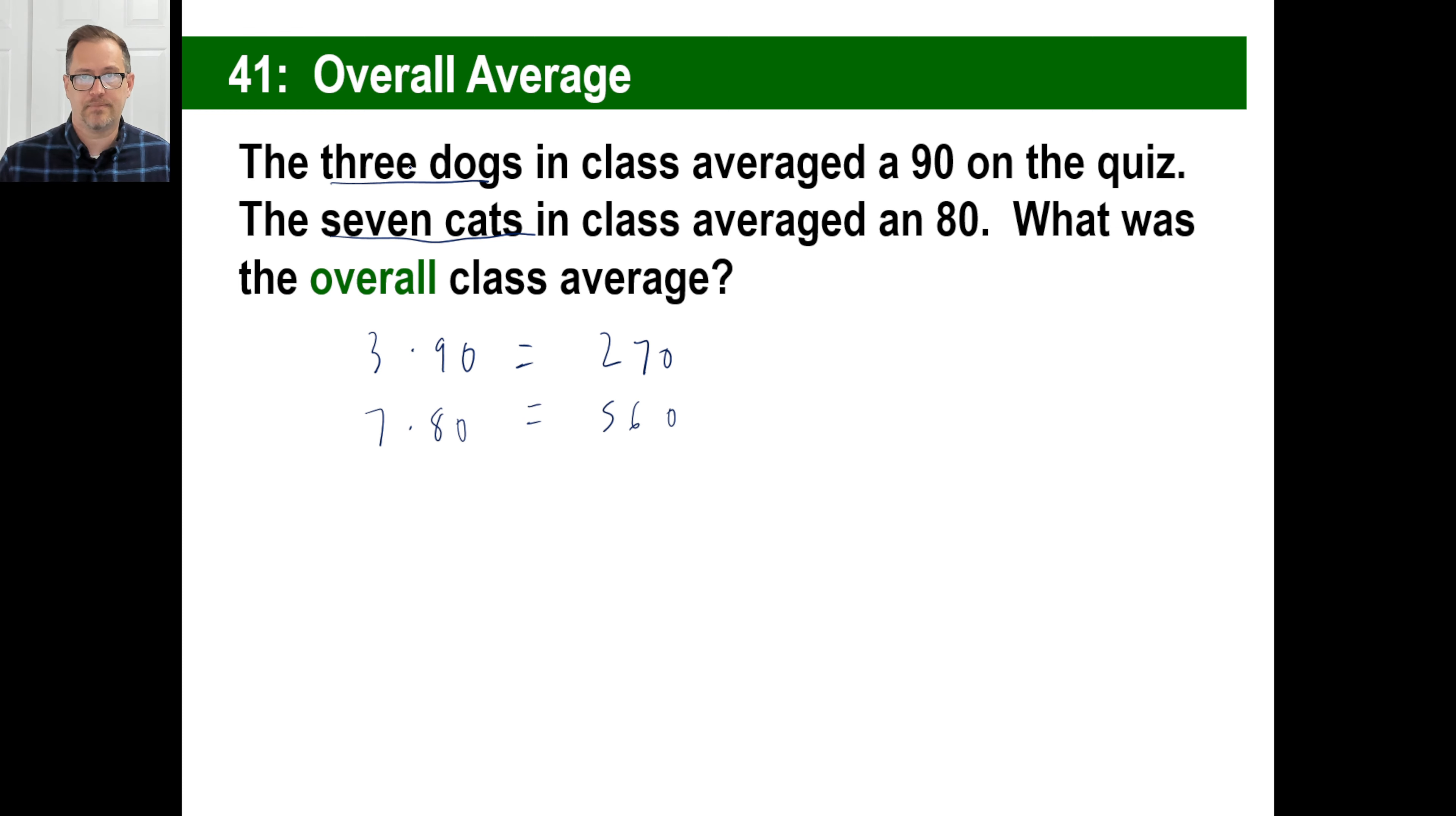There are 10 animals total, three plus seven. The total number of points scored, seven plus six is 13, 830. And that is what you're going to divide by 10 to get your average of, of course, 83 is your average. Now, that's a sensible answer because more cats are in the class. It's an advanced class. They averaged an 80. So that skews the overall average away from 85, closer to 80, which makes sense.